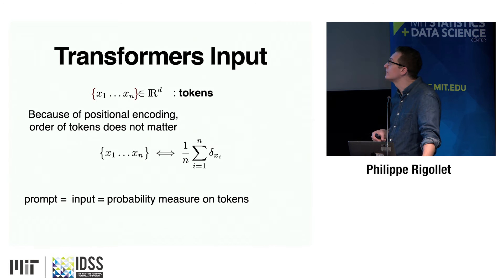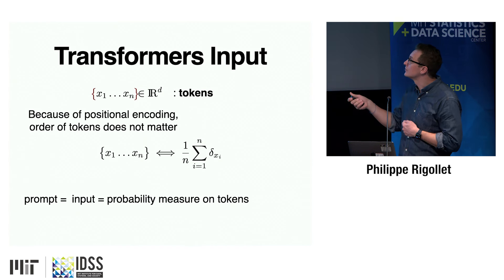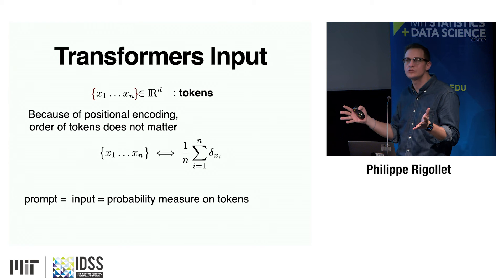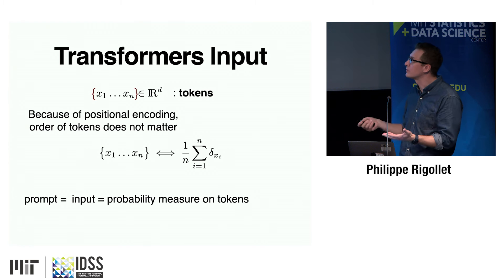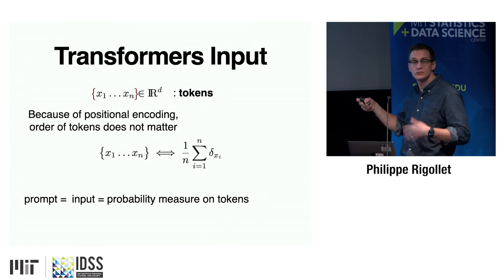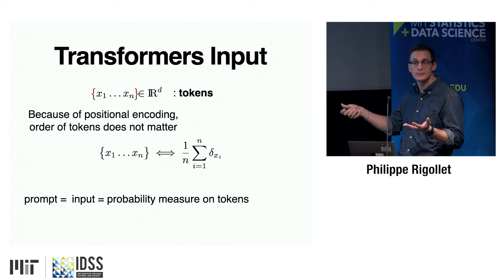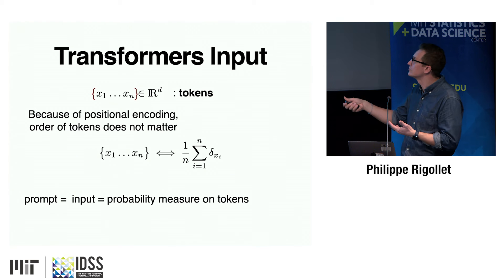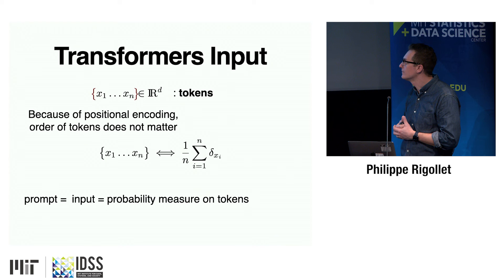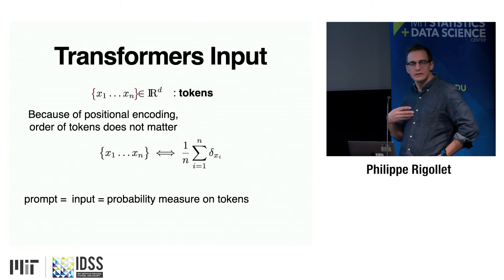Now forget about applications and think about what transformers are doing mathematically. The input was a prompt — I had x₁ to x_n tokens. Since I know the positional encoding, I can forget about their order: rather than a sequence of x₁...x_n, I really have a set. I can turn this set into an empirical measure — the empirical measure of the positions of the xᵢ's. Those tokens are in ℝᵈ, and I don't care about their order. This is just a multi-set with corresponding empirical measure.